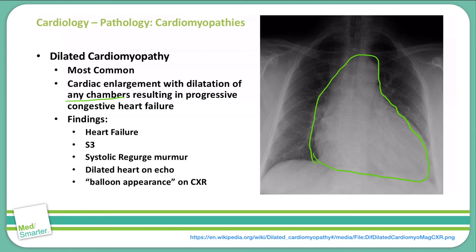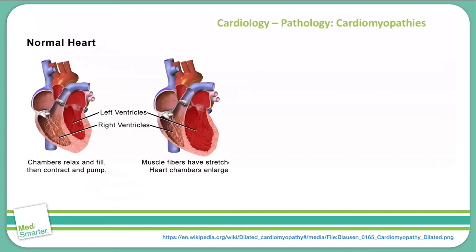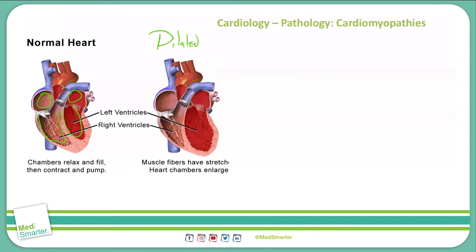This enlargement is characterized by sarcomeres being added in series, which distinguishes it from hypertrophic obstructive cardiomyopathy. In dilated cardiomyopathy, the sarcomeres are added in series. Comparing a normal heart to a dilated heart on the diagram, you can see a very enlarged left ventricle due to stretching of muscle fibers. There is also a slight decrease in the right ventricle size, as the enlarged left ventricle takes up its space.